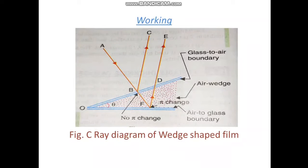The two rays, BC and DE, we are able to see in this diagram, ray diagram, thus reflected from the top and bottom of the air film are coherent as they are derived from the same ray AB through division of amplitude.